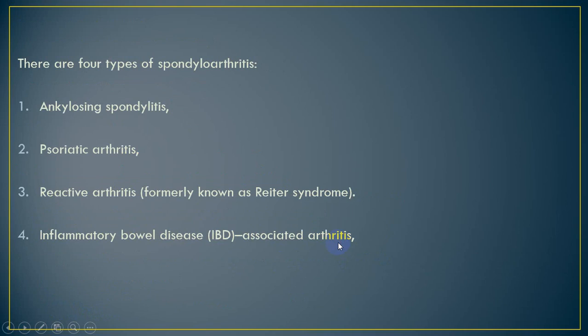There are four disorders belonging to the group of Spondyloarthropathy: (1) Ankylosing Spondylitis, (2) Psoriatic Arthritis, (3) Reactive Arthritis — previously called Reiter's Syndrome, and (4) Inflammatory Bowel Disease-associated arthritis. Today we will discuss Ankylosing Spondylitis.